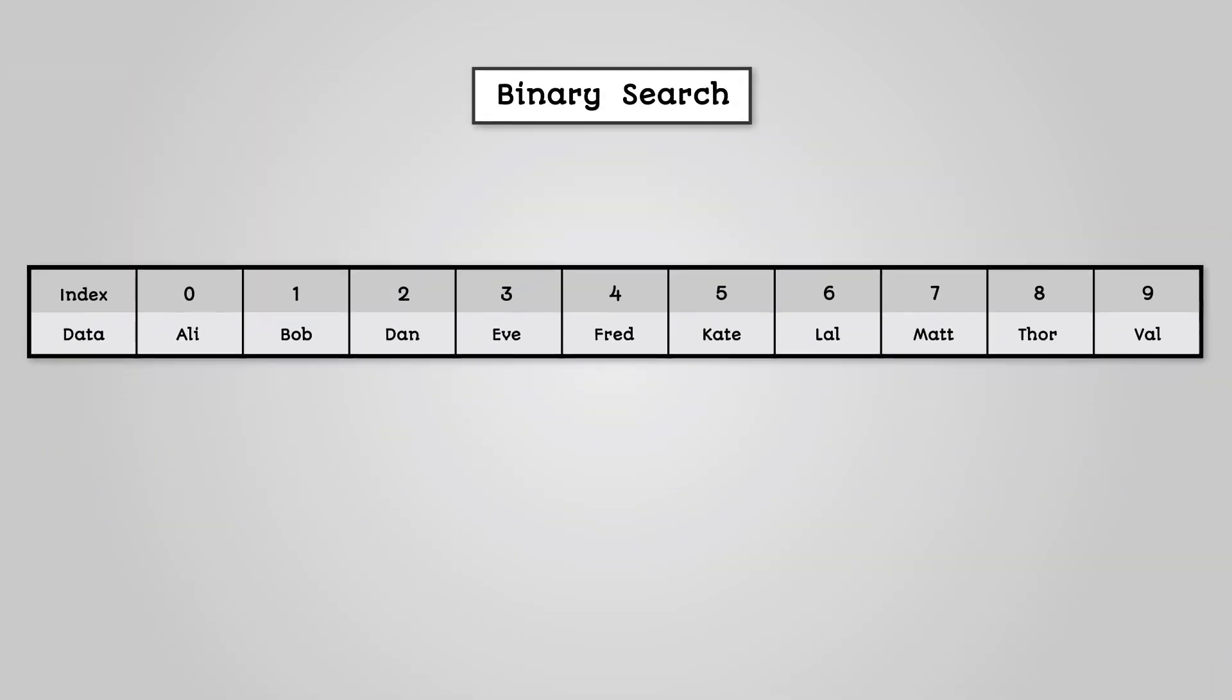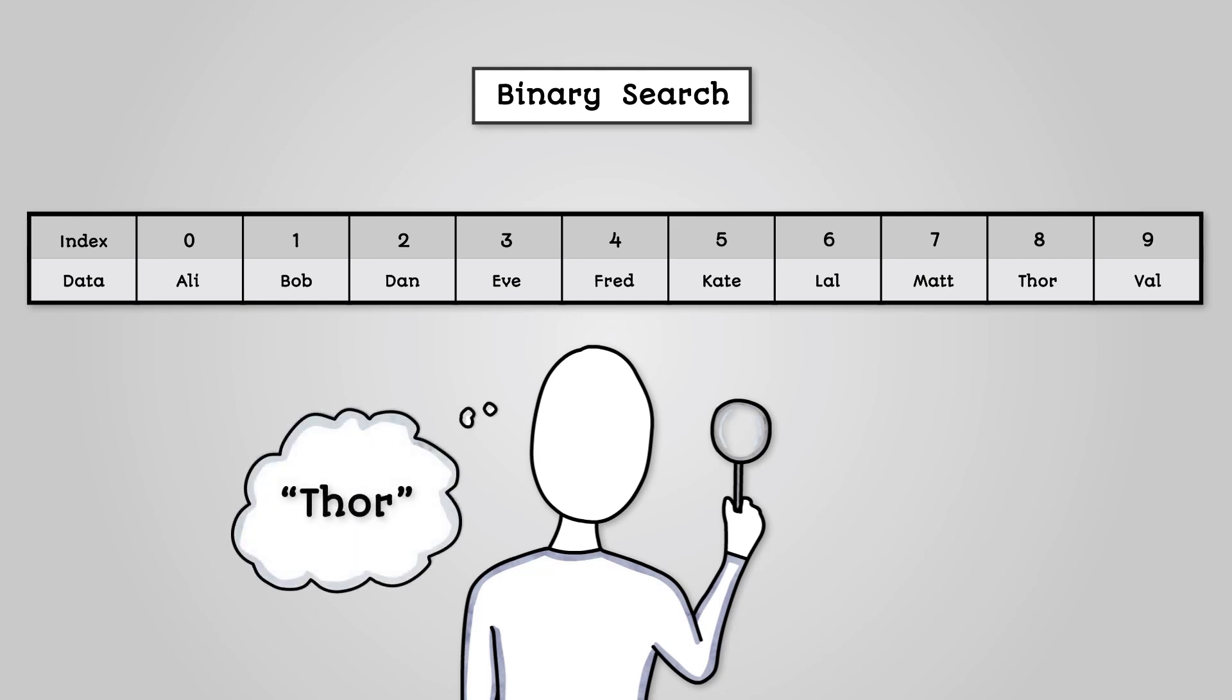Consider we have a list of names and we want to search for Thor. The binary search algorithm would work as follows. You start at the middle index of the list. In our case this is Thor. Check if this is what we are searching for.